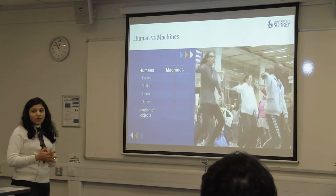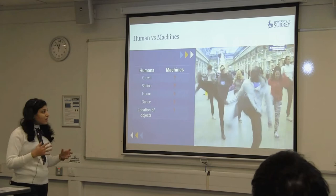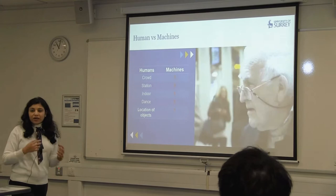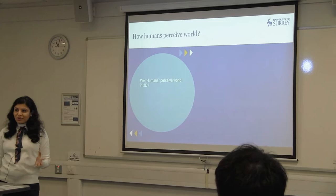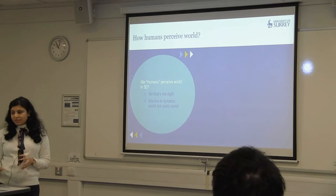When humans see a video, they can infer a lot of information — for example, you can see a crowd, a station, an indoor environment, people dancing, and also the location of objects. But what happens when you feed this video to machines? They cannot infer anything out of it. This is just garbage information to machines. We humans perceive the world in 3D — is that right? No, that's not right.